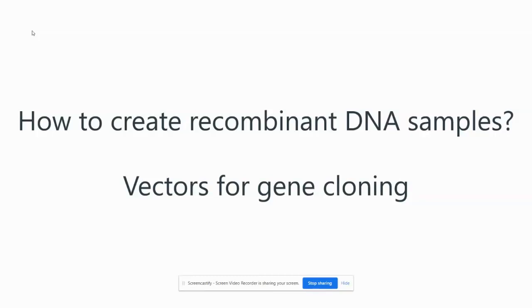Hi everybody. As promised in the welcome video, this first lecture will be the only lecture recorded in real time in 2020. All the remaining lectures were recorded in the classroom, so you'll hear questions from previous students and my answers. This lecture will probably be shorter than the others simply because I'm just going to go through the slides. What we're going to talk about today is how to create recombinant DNA samples — essentially, how to clone genes. We'll cover the details of gene cloning, and when you come into the lab for your first set of activities, one of the things we'll do is clone a gene there as well.